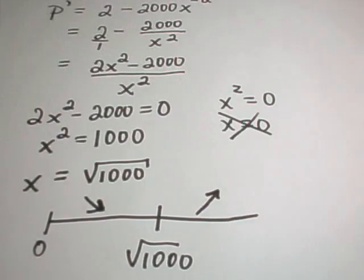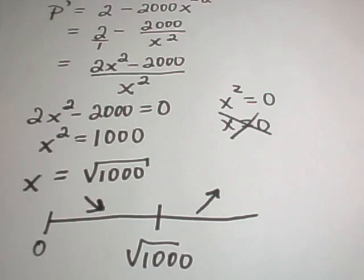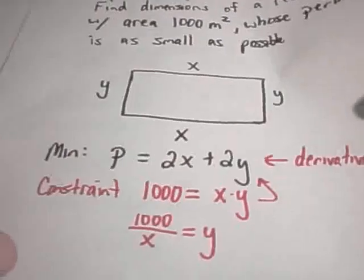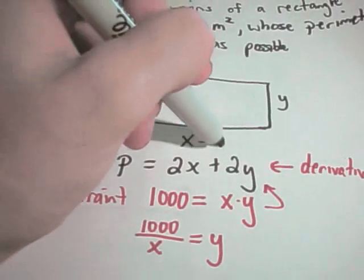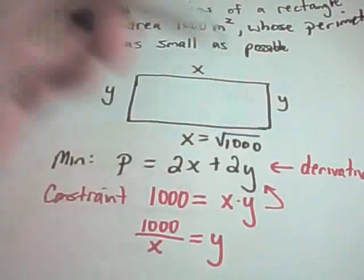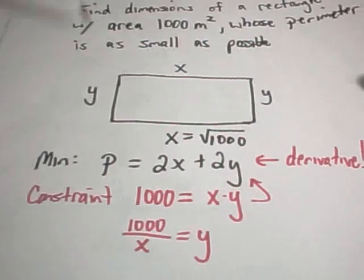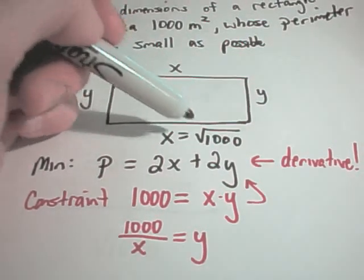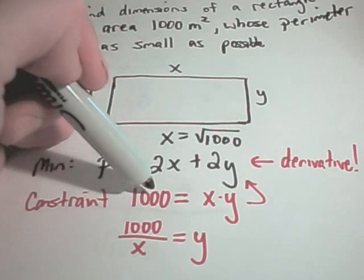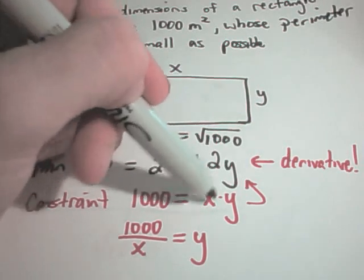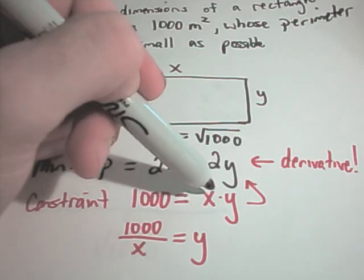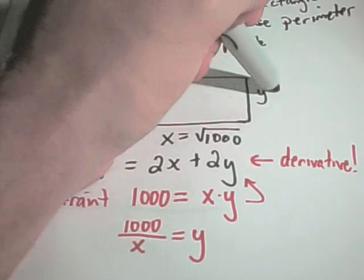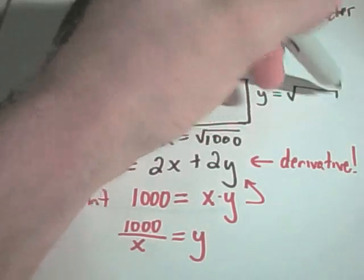I now know that the width X of my rectangle has to equal square root of 1000. Now I can simply plug that back in. I know that the total area has to equal 1000, so if I plug in the square root of 1000, the square root of 1000 times the square root of 1000 equals 1000.